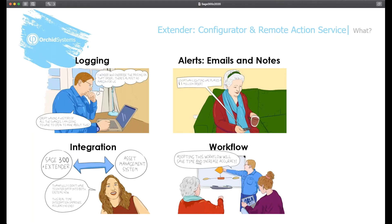Building on the Extender workflow capability released last year, we're pleased to release our latest offering: Remote Action Service. This is a subscription-based service which lets users progress Extender workflow and approve Sage 300 records in the cloud without logging on to Sage 300.